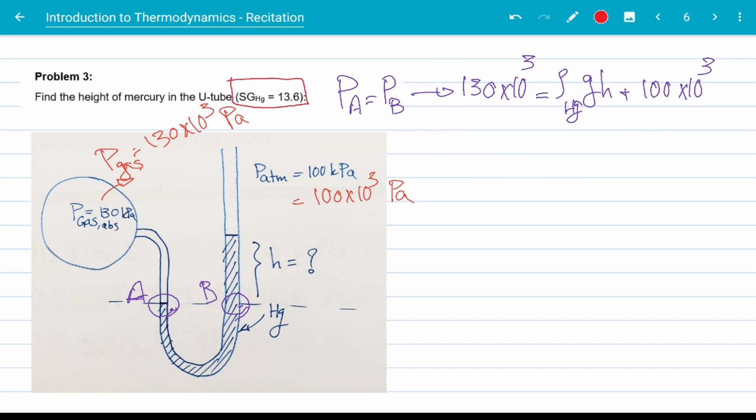Now we need to find the density of mercury. It's given in the format of a specific gravity, which is the ratio of density to density of pure water at 4 degrees Celsius, which is a thousand kilograms per meters cube. Plug the numbers in and we get rho of Hg is equal to 13,600 kilograms per meters cube.